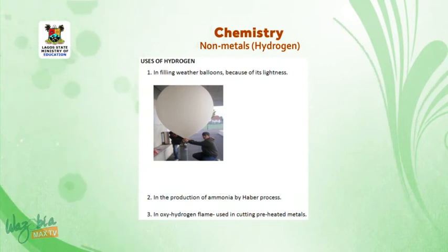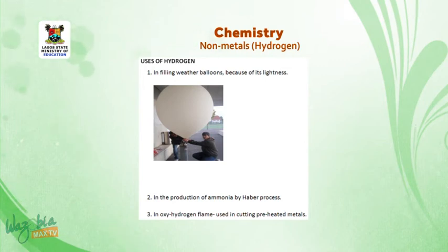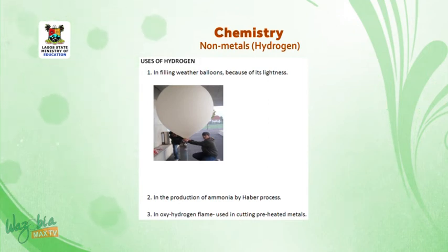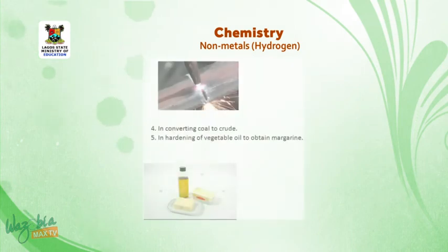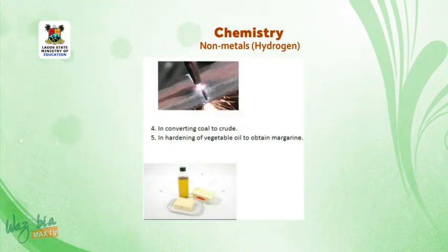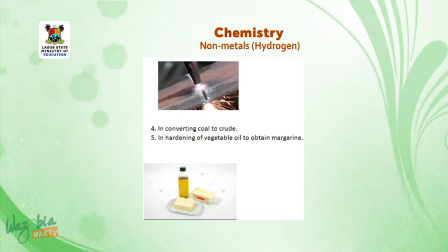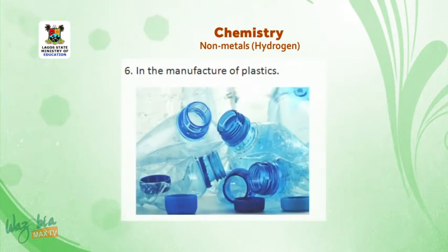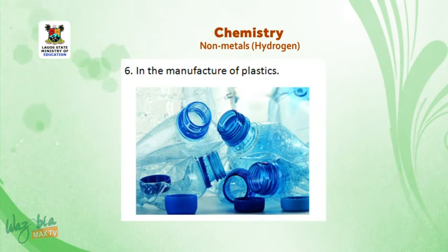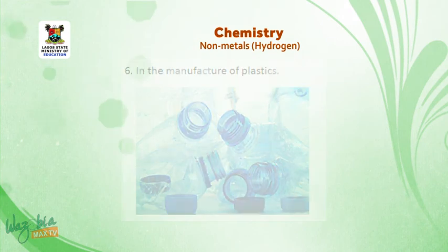Uses of hydrogen: 1. Hydrogen is used in filling weather balloons because of its lightness. 2. In the production of ammonia by the Haber process. 3. In the oxyhydrogen flame used in cutting pre-heated metals. 4. It is used in converting coal to crude oil. 5. It is used in the hardening of vegetable oil to obtain margarine, a chemical reaction known as hydrogenation of oil. 6. It is used in the manufacture of plastics.